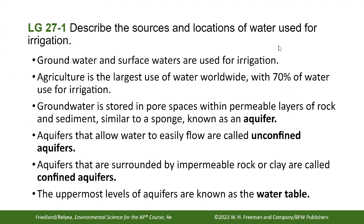Groundwater and surface water are used for irrigation. Agriculture is the largest use of water worldwide, with 70% of water being used for irrigation. Groundwater is stored in the pore spaces within the permeable layer of rock and sediment, similar to a sponge, and is known as an aquifer.